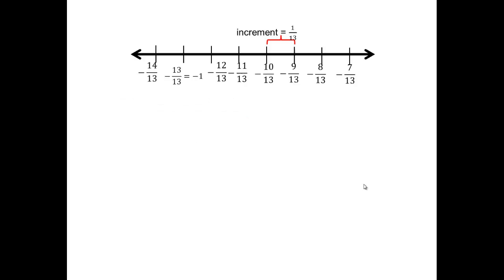If I plot numbers and I have fractional increments, like say a 13th, then if I label one of my tick marks as negative 10 13ths, then I'll have negative 9, negative 8, negative 7, negative 11, 12.